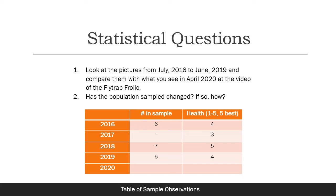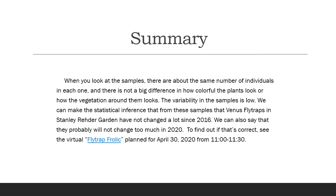The 2020 numbers are not filled in yet. We will see those from the Frolic on April 30th, Thursday morning starting at 11, where we'll see a live example of how samples and individuals have changed. When you look at the samples, they're about the same number of individuals, with not a big difference in how colorful the plants look, the vegetation around them, or the stem sizes. The variability is therefore low.